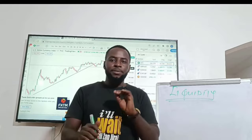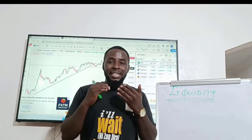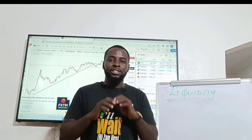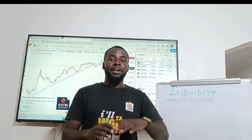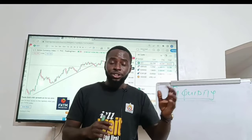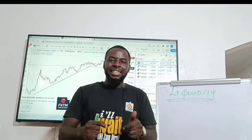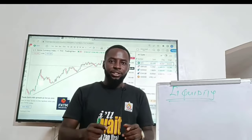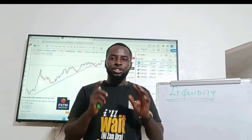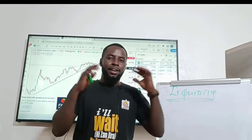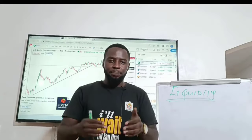There are two types of liquidity — external range liquidity and internal range liquidity. Liquidity is either in the form of an external range or an internal range. Let's go to the chart as I show you what it means to identify liquidity pools on the market.